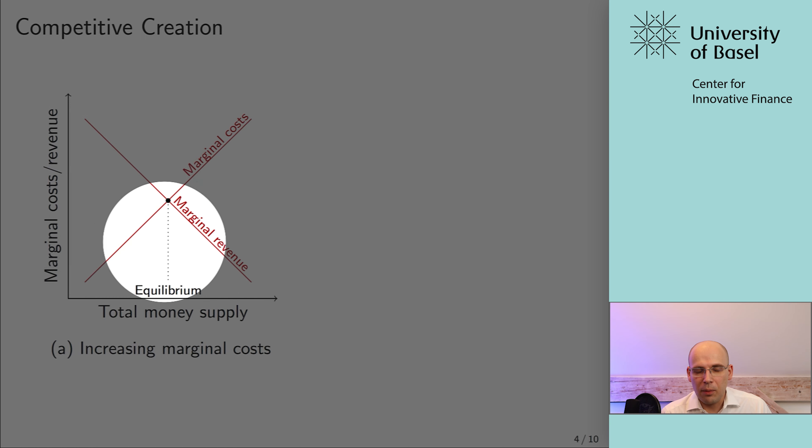One simple example that explains why marginal cost goes up and marginal revenue goes down is gold. When you're looking for gold and want to produce new coins, initially it might be really easy because there's a lot of gold in the ground. But the more gold is found, the harder it gets to find new deposits — so the marginal cost for each unit increases. On the other hand, the more gold coins are already circulating, the lower the willingness to pay for them — so the marginal revenue goes down. Since marginal revenue goes down and marginal cost goes up, there is definitely somewhere an equilibrium — a value for the total money supply in the economy.